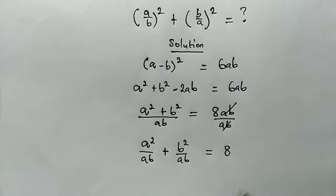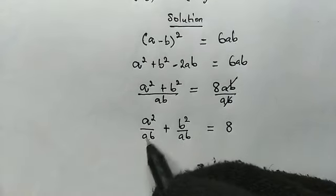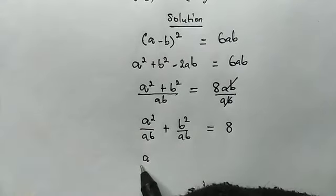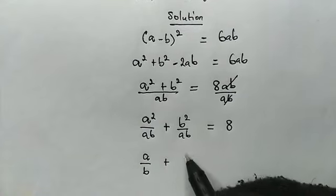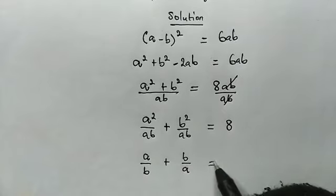We cancel ab, we're left with 8. a² divided by a gives us just a over b, plus b² divided by b, we are left with b over a. And this is equal to 8.